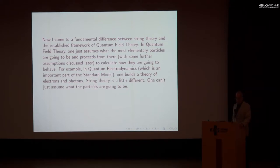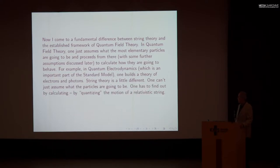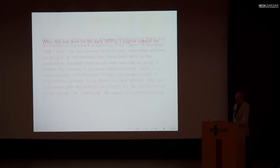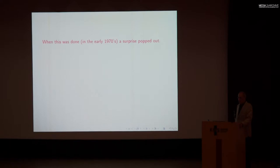String theory is a little different. You can't just decide what the particles are going to be — you have to find out what the particles are by calculating, by quantizing the motion of a relativistic string. When this was done in the early 1970s, a surprise popped out.